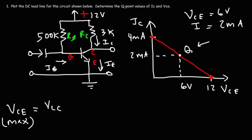The circuit we have may not be a midpoint bias circuit with these values, so we need to calculate the actual IC and VCE values for this particular circuit. In an ideal situation, we want VCE to be half of VCC and IC to be half of the maximum saturation current, but that's an ideal situation we don't necessarily have in this example.